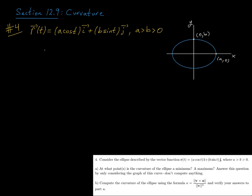Alright, and last up for section 12.9, we're going to look at problem number four on the worksheet. It says, consider the ellipse described by the vector function r(t), which is a cosine t i plus b sine t j, and here a and b are positive constants, and a is strictly greater than b.